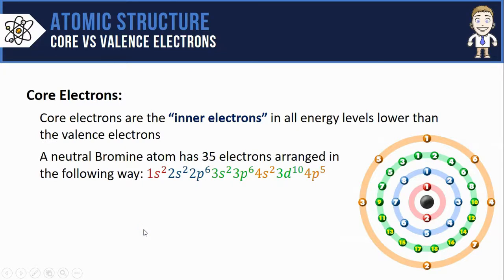These are, of course, the inner electrons and all the energy levels lower than the valence. Here on bromine, since my outer energy level here are the valence ones, that means the core electrons is everything inside that.